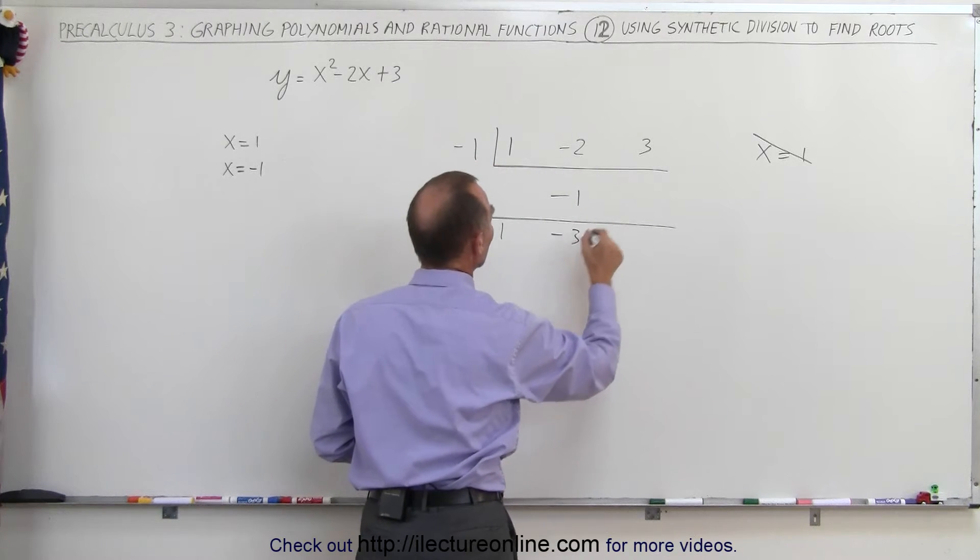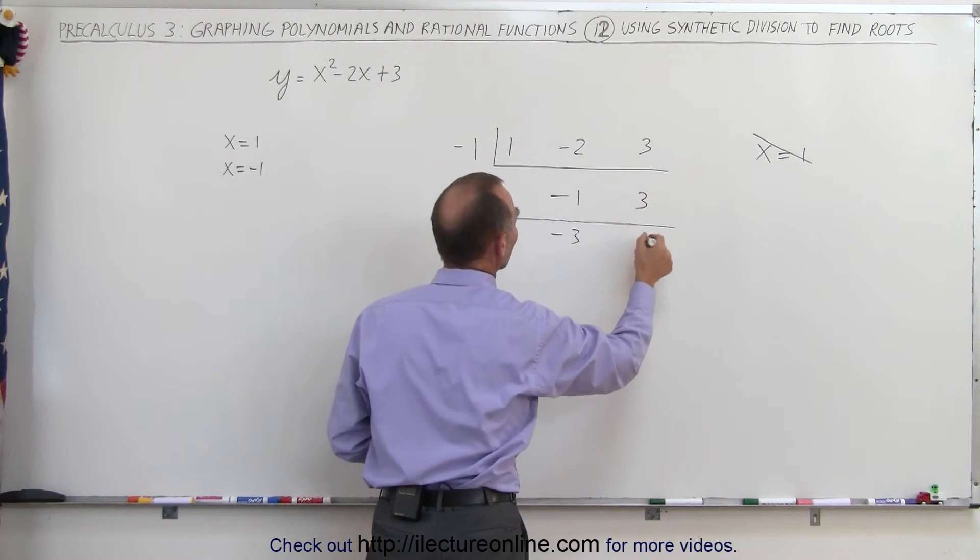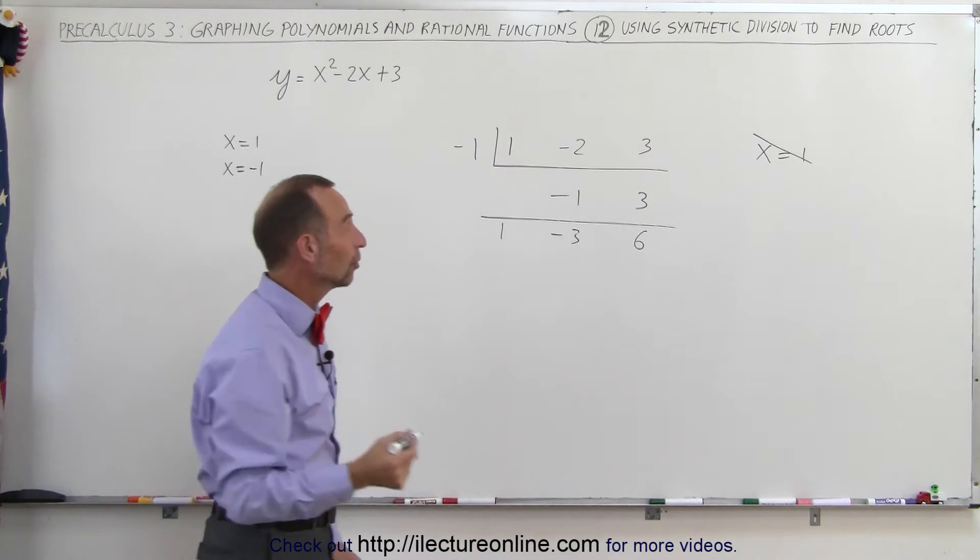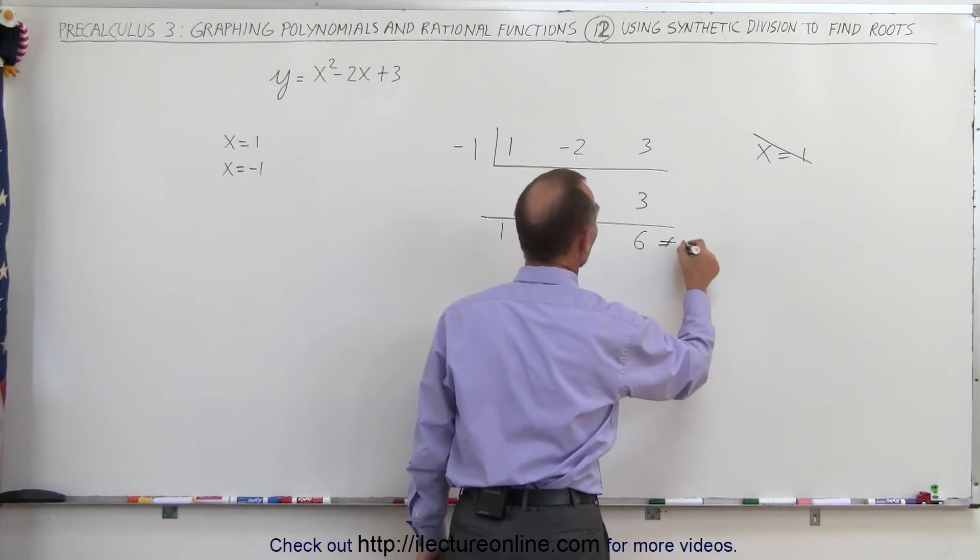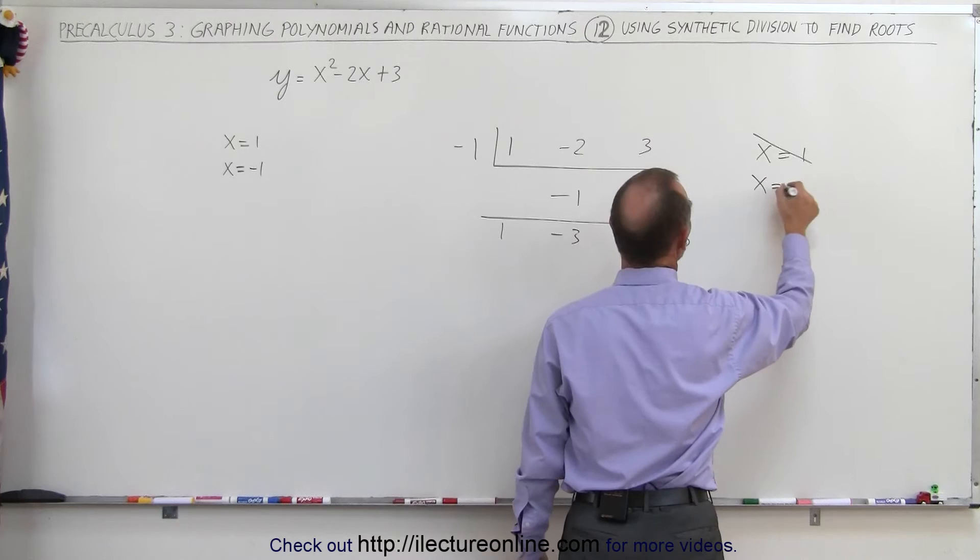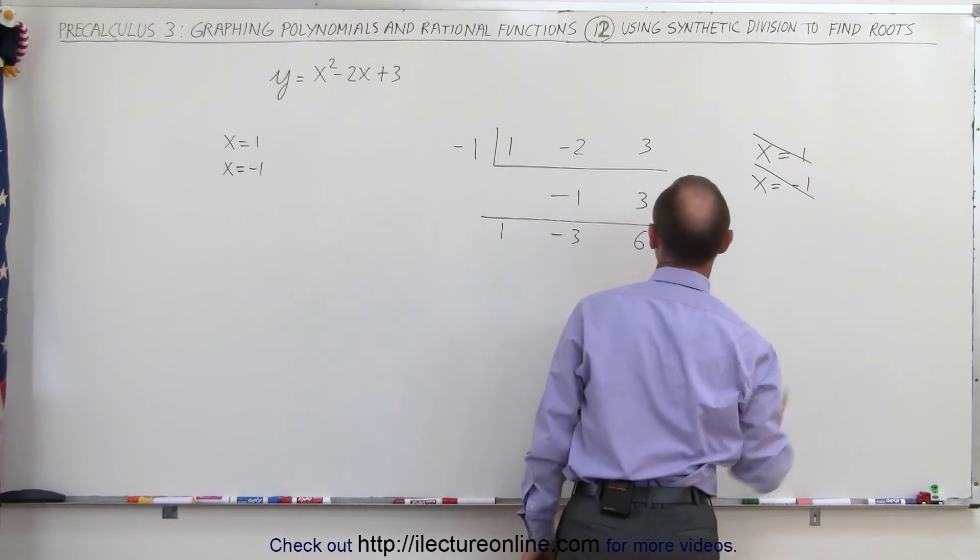Negative 1 times negative 3 is a positive 3, add them together, you get a 6. So here you can see that also doesn't work, it's not equal to 0, so therefore x equals negative 1 is not a root.